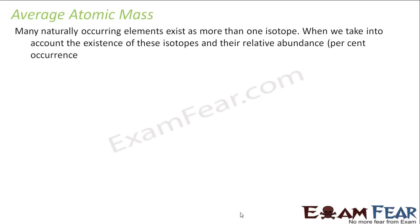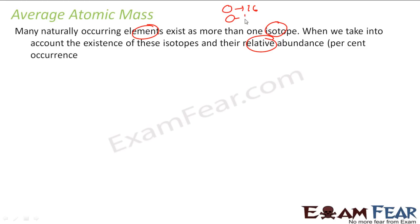Now let's understand average atomic mass. Many elements exist in more than one isotope — for example, carbon and oxygen. When we account for the existence of isotopes and their relative abundance, we must find the average atomic mass. For oxygen, when they originally took oxygen-16 as the base, they later found oxygen-17 and oxygen-18 also exist, in relatively small amounts. So they found the average atomic mass, because if you use 16 for oxygen in a combustion reaction, you get the wrong answer — the true average is not exactly 16 but is based on the abundance of all isotopes.